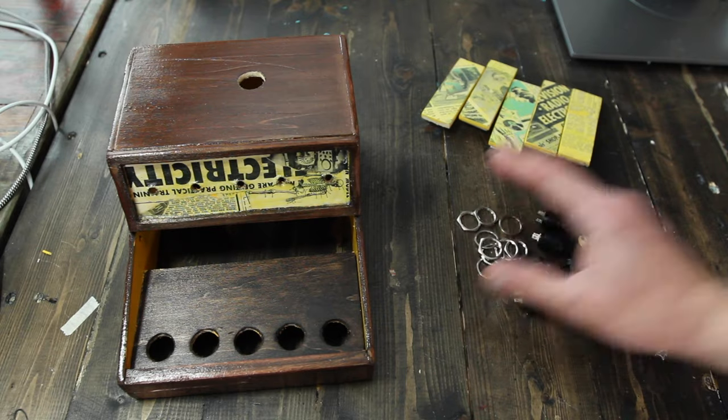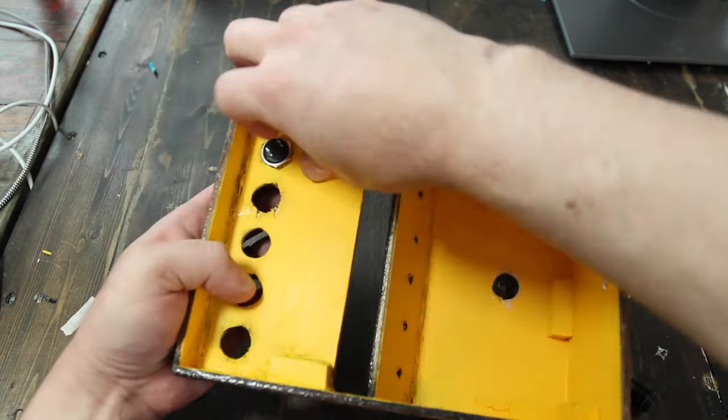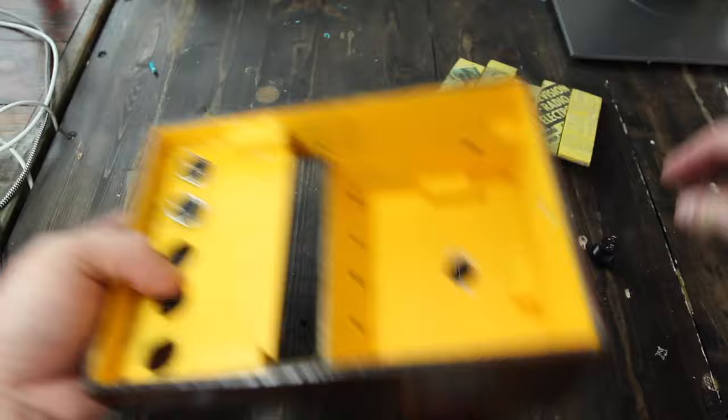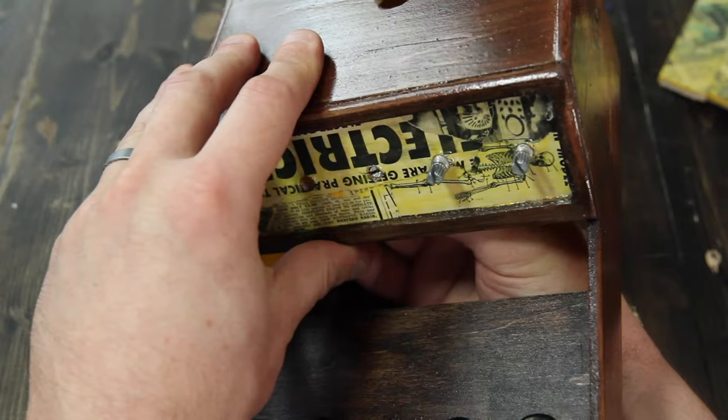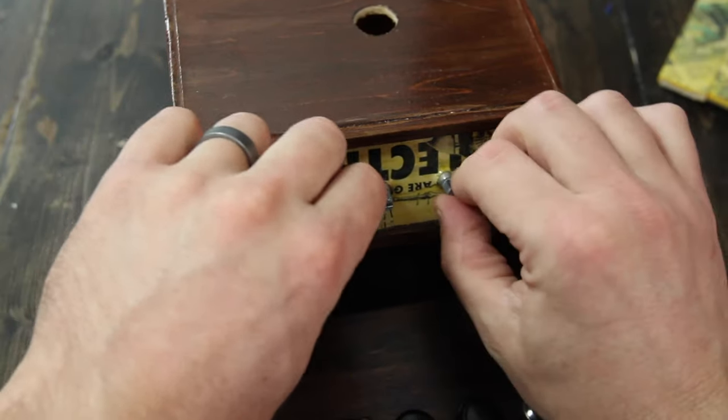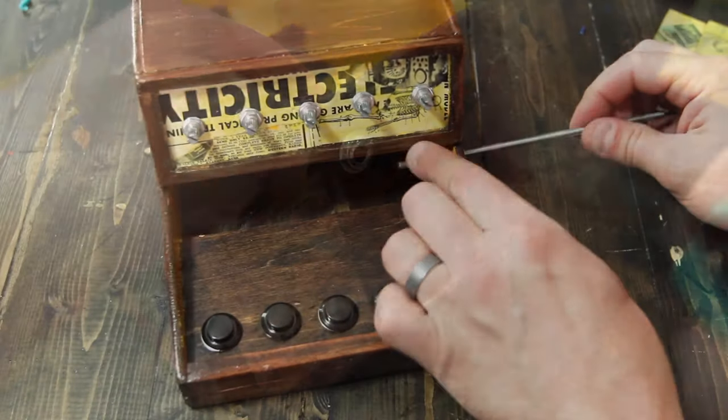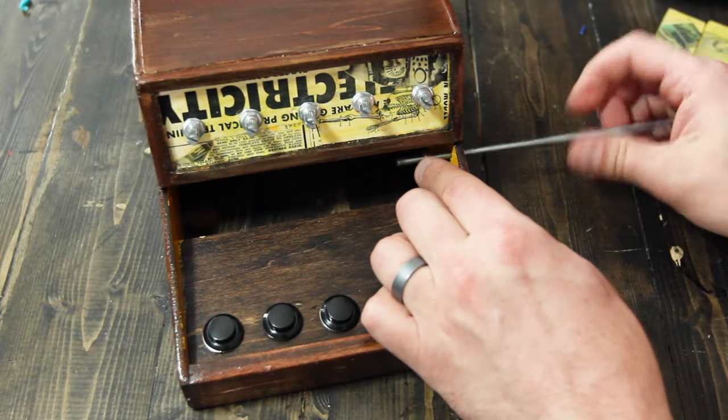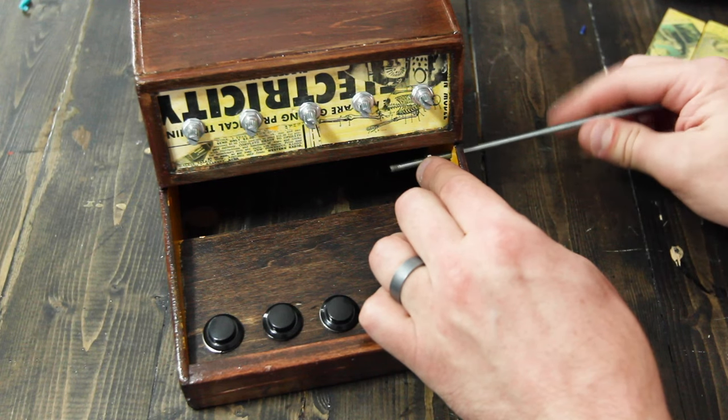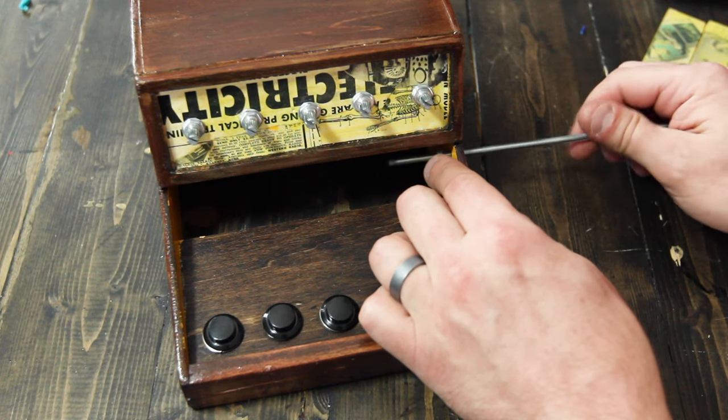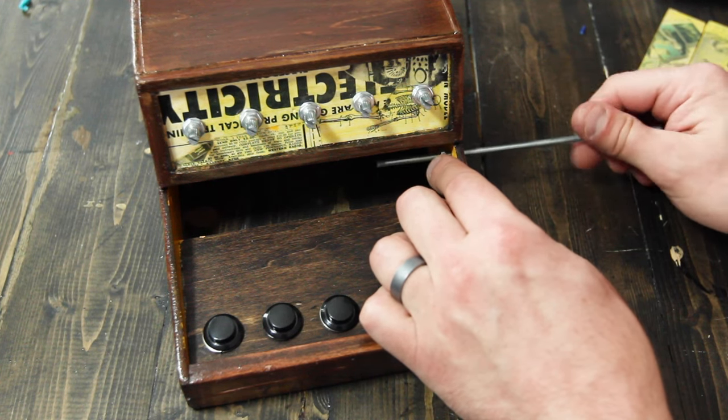Now, populate the case with all the components. I won't show this entire process as it's fairly straightforward. Just keep in mind that some holes might need additional sanding for the elements to fit. For the keys, add additional nuts on the inside of the case for added stability. These need to be the same gauge as the threaded rod. Number 8-32 for this project.